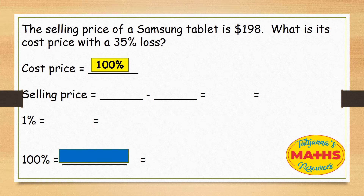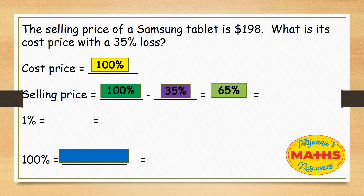The cost price is 100%. In this case, the selling price would be 100% minus the 35% loss, which gives us 65%. That would be equal to $198, which is the selling price.